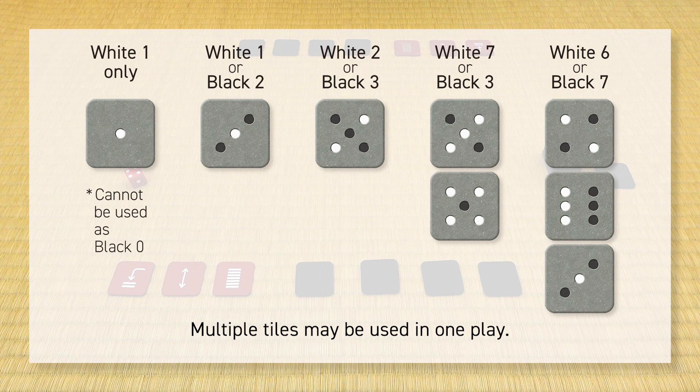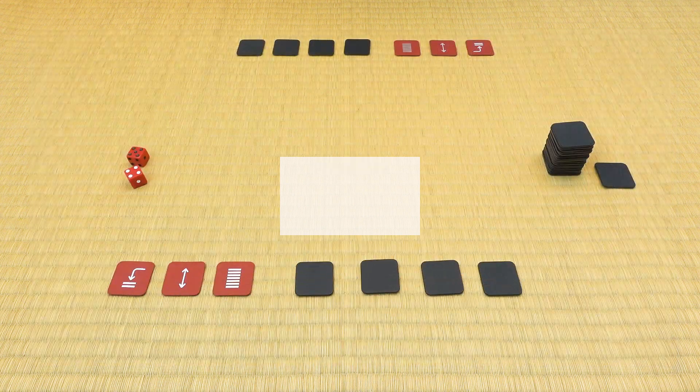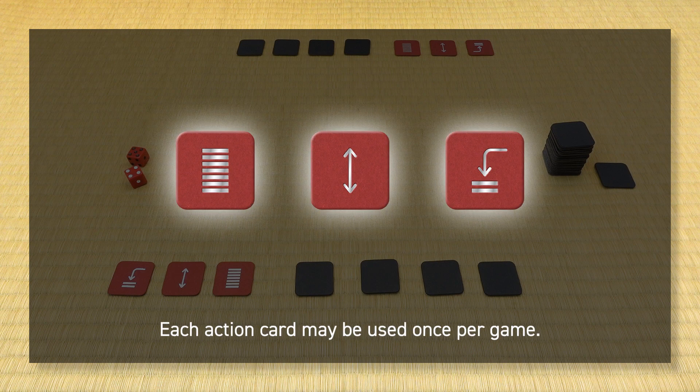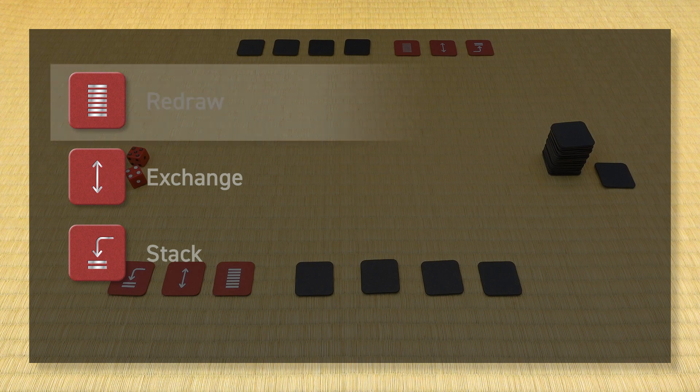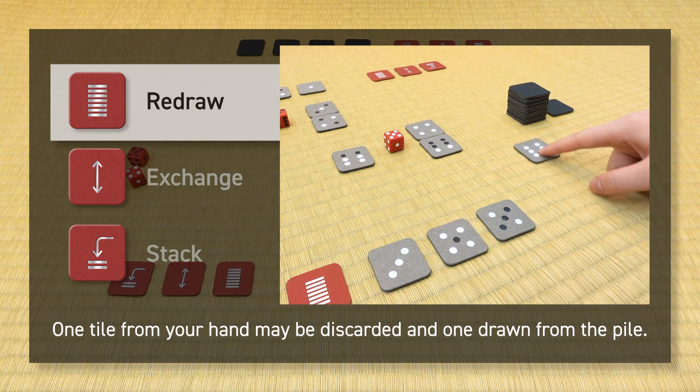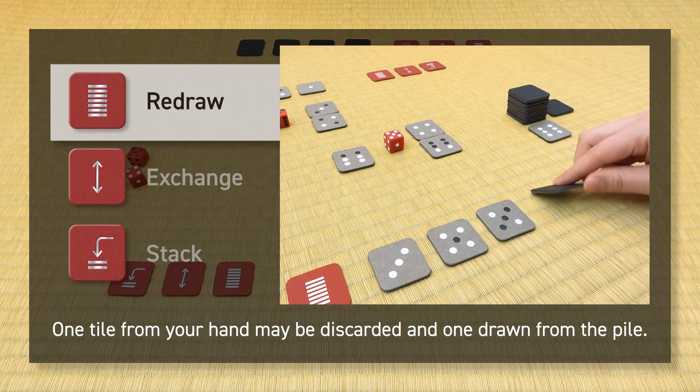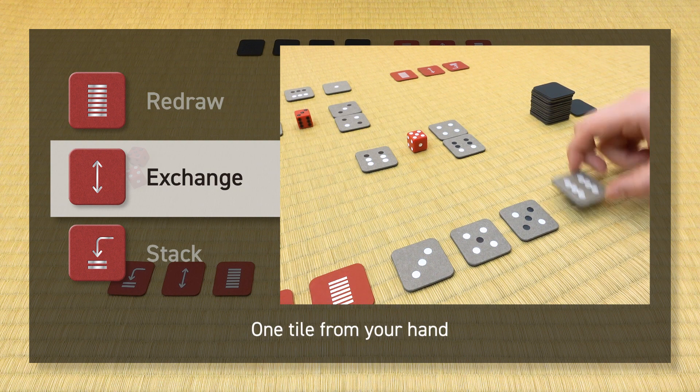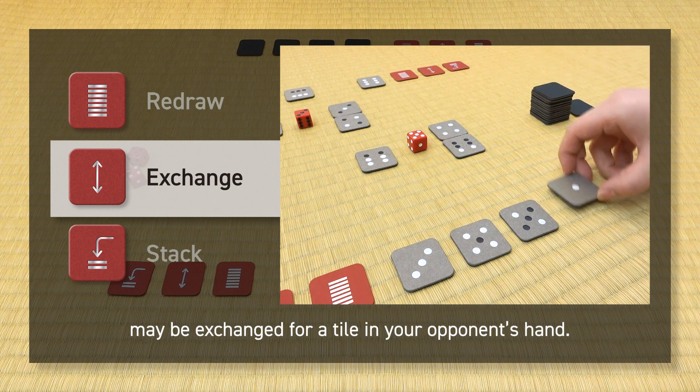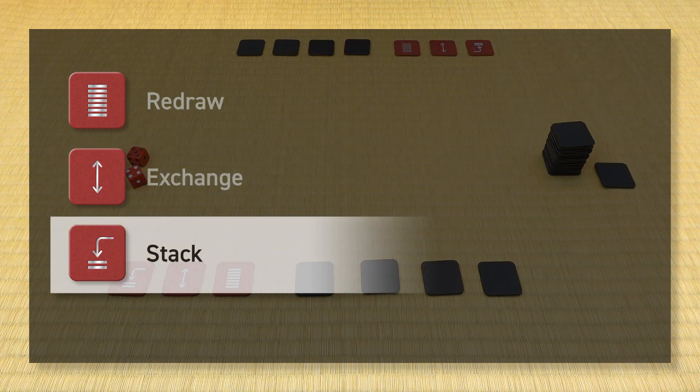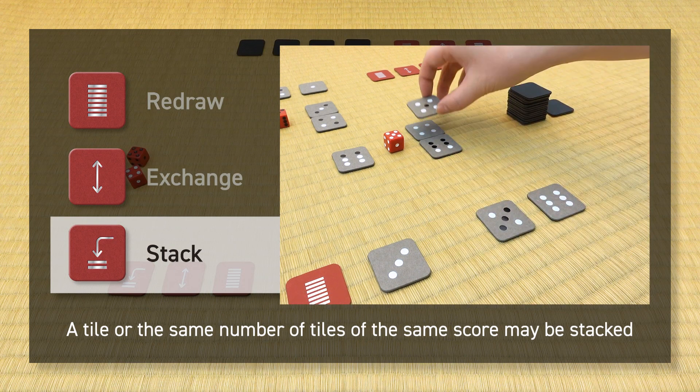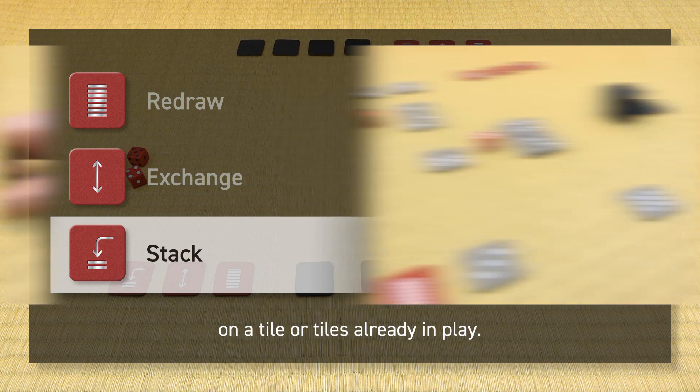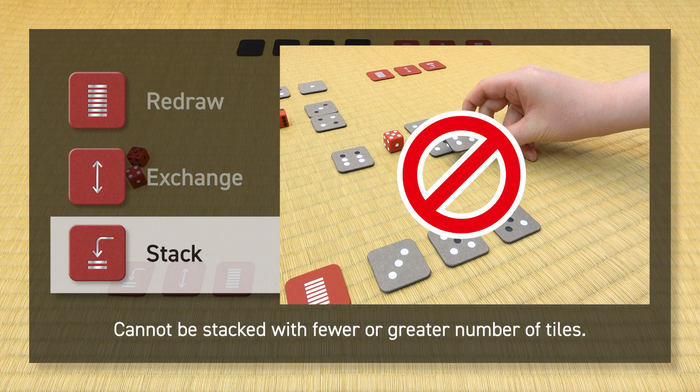Three action cards: Each action card may be used once per game. Redraw—one tile from your hand may be discarded and one drawn from the pile. Exchange—one tile from your hand may be exchanged for a tile in your opponent's hand. Stack—a tile or the same number of tiles of the same score may be stacked on a tile or tiles already in play. Cannot be stacked with fewer or greater number of tiles.